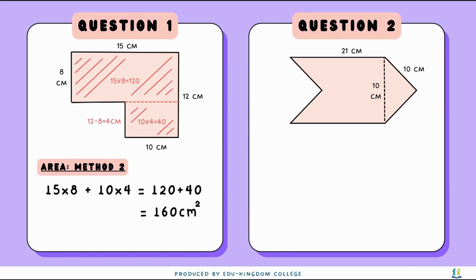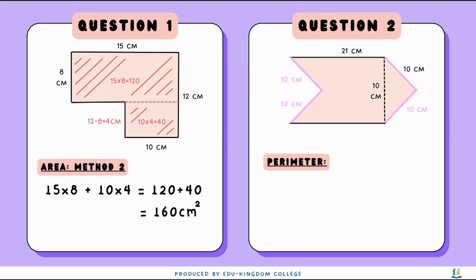Now moving on to question 2. Again for perimeter, we just add all the sides together. You can see these two lines are parallel and have the same length, so we know these two are going to be 21 centimeters. And then the four lengths on the sides are also the same — 10 centimeters each.